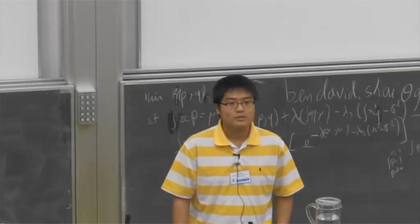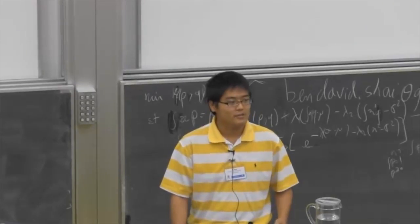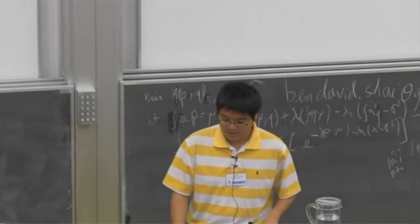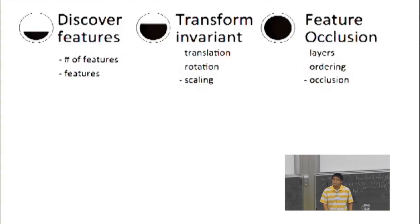Of course, first we want the model to detect features in a non-parametric way. That means not just what the features are, but also how many features are in the data. Second, we want the features detected from this model to be transform invariant—invariant to translation, rotation, and scaling. Third, we want this model to be directly applicable to real data, which basically have a lot of feature occlusion.